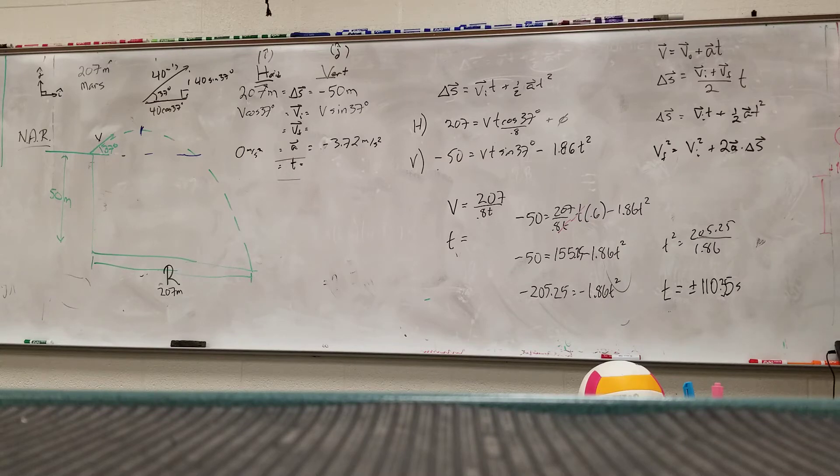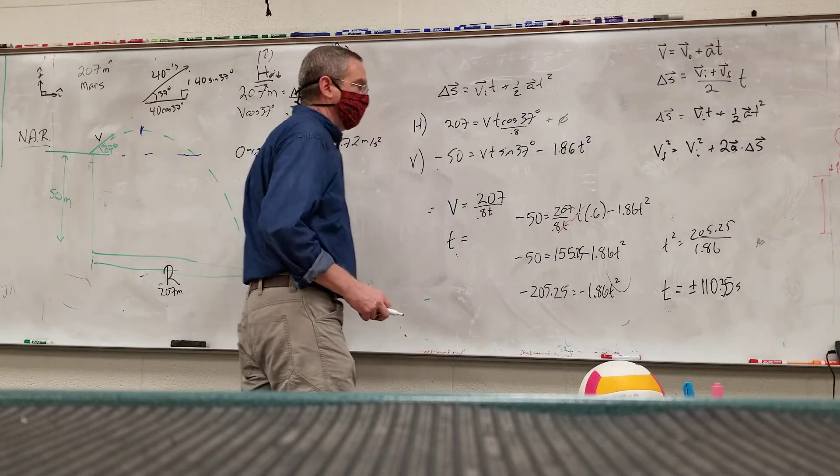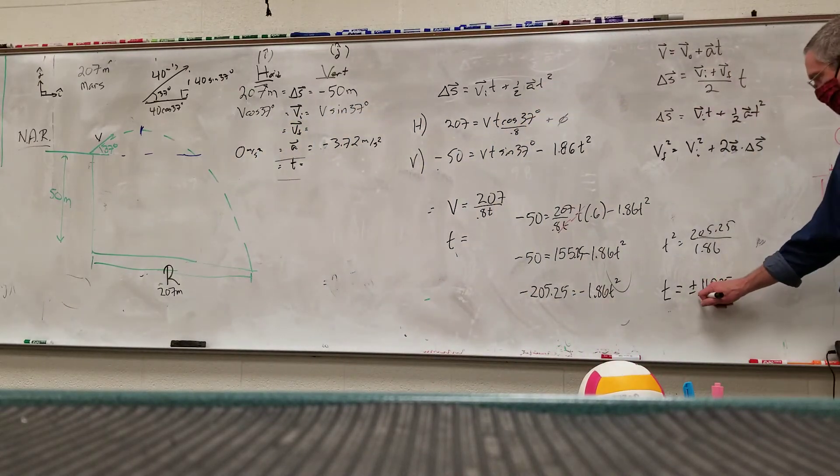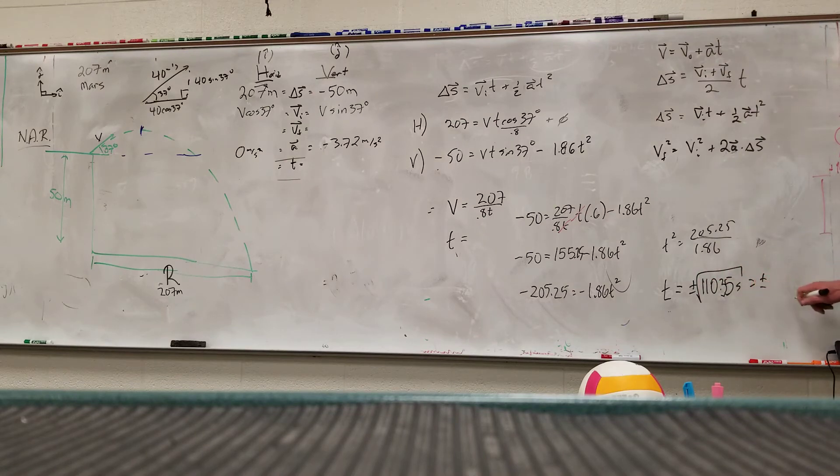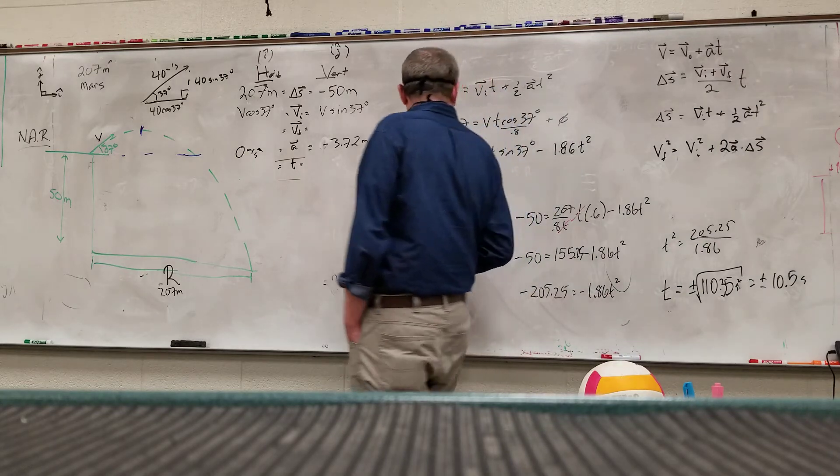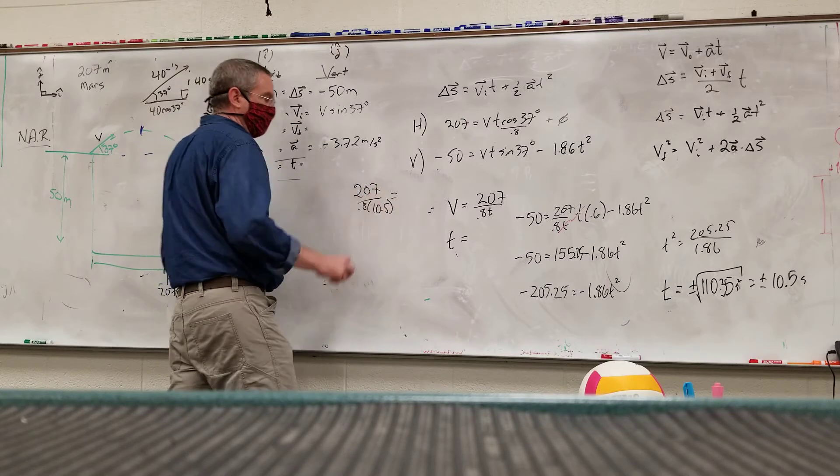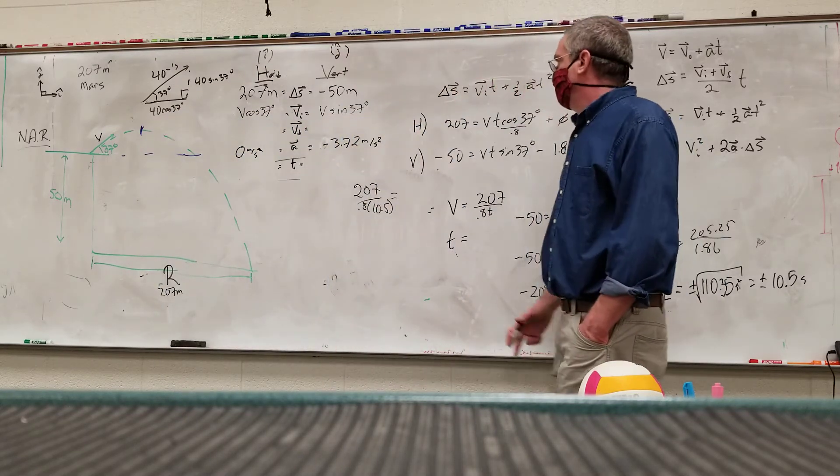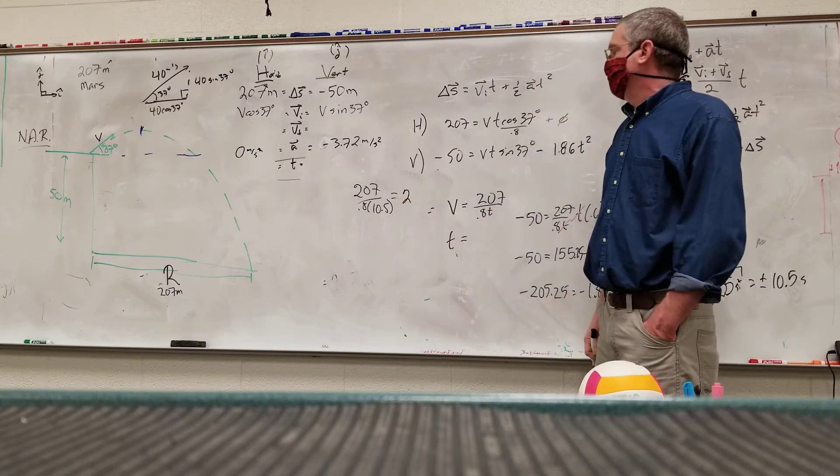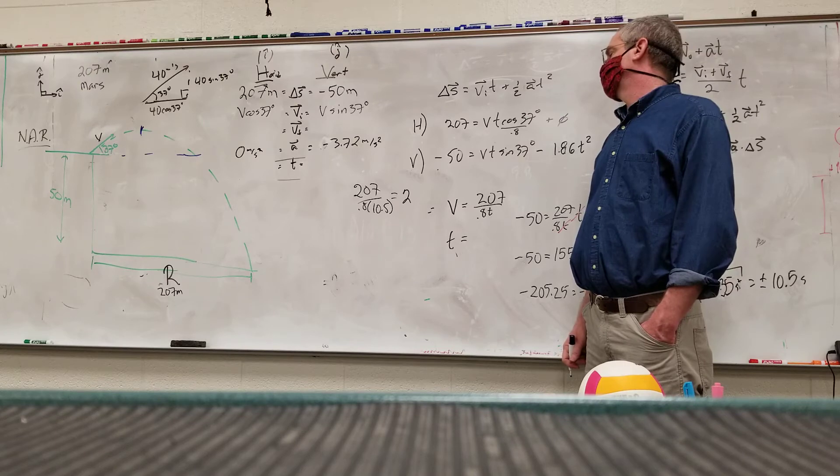110.35 is going to be 10.35. That's like, I was in there for quite a while. But we haven't solved for V yet, but we have an equation right here. Okay, so plus or minus 10 and a half seconds. Last time it was in the air for a little under 7 seconds. Now it's in the air for over 10 seconds. We can solve for V. So we get 207 over 0.8 times 10.5. 24.6.